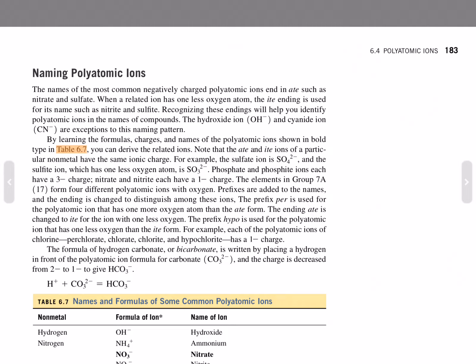The formula of hydrogen carbonate, or bicarbonate, is written by placing hydrogen in front of the polyatomic formula for carbonate, and the charge decreases from negative 2 to negative 1 to give HCO3^-. H^+ plus CO3^2- yields HCO3^-.